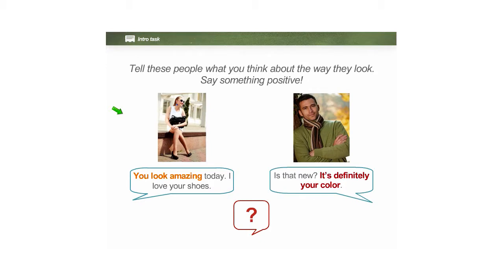Tell these people what you think about the way they look. Say something positive. So we're going to be giving these people compliments. You can say 'you look amazing today, I love your shoes.' You can also say about this man, 'Is that new? It's definitely your color.' So looking at these two pictures, tell these people what you think about the way they look and say something positive. Remember, we are looking for compliments. Raise your hand when you're ready.